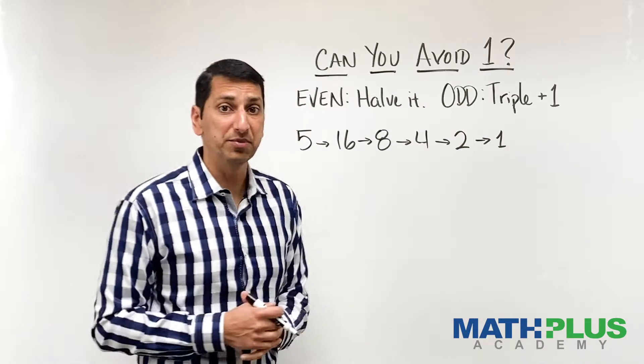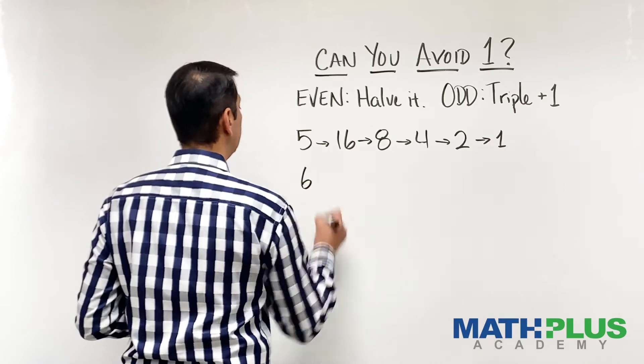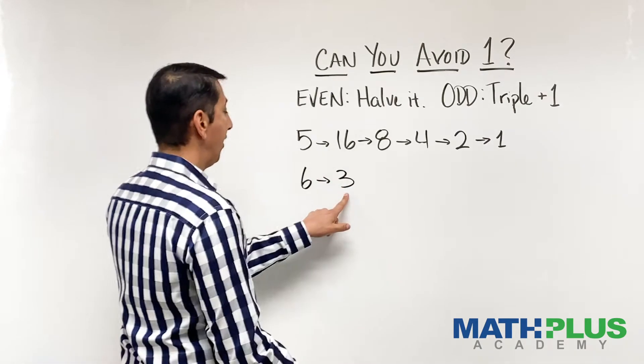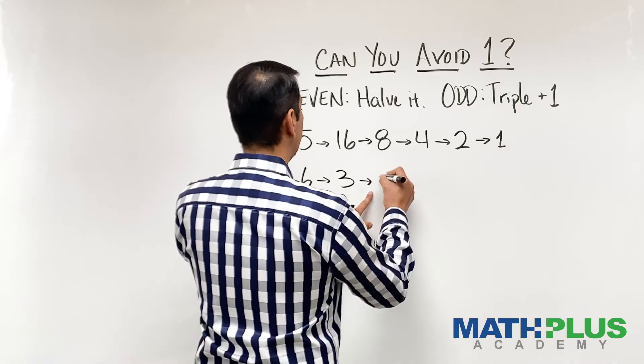Let's try another number and see what happens. How about six? Well, six is even, so this time I will take half to start. Three is odd. I triple it, which is nine, and add one. That's ten.